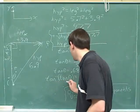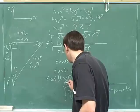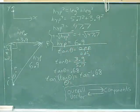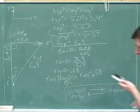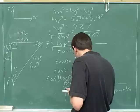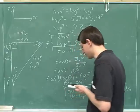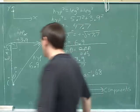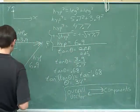If you take a tangent and then an inverse tangent, you get back to the original variable. So now we have to take the inverse tangent of 0.68, which is approximately 34 degrees. Rounding off, 34 degrees. So now we know that this angle is 34 degrees.